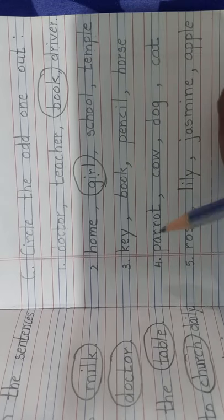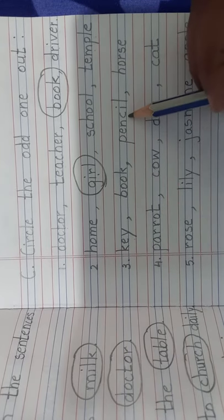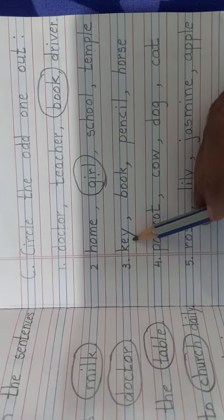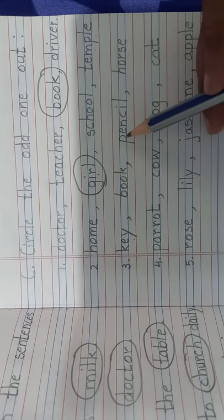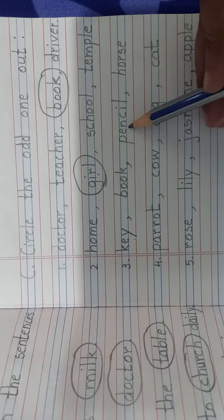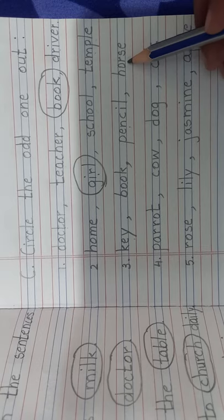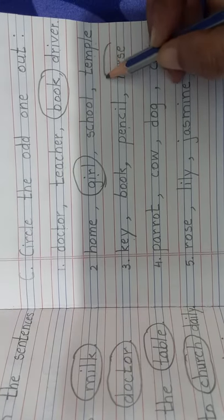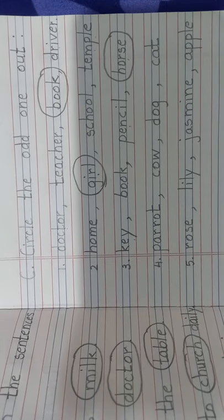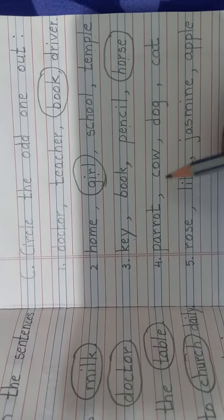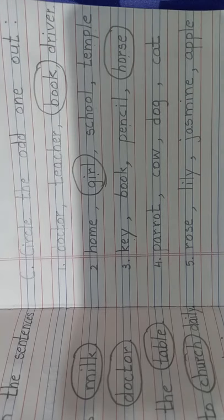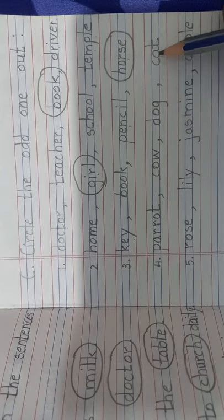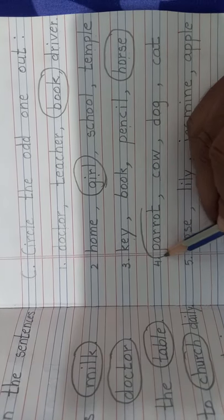In the next row, key, book, pencil, horse. Is horse a thing, children? No. Horse is an animal. So we'll have to circle out horse. Parrot, cow, dog, cat. Parrot is a bird. The rest are animals. So parrot is the odd one out.